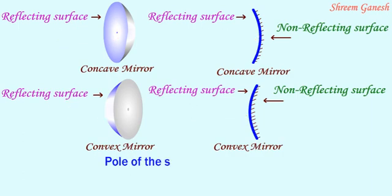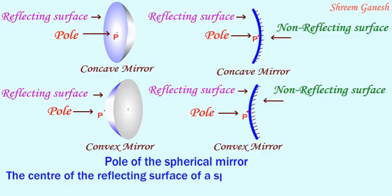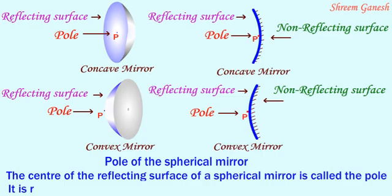Pole of the spherical mirror. The center of the reflecting surface of a spherical mirror is called the pole. It is represented by the letter P.